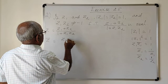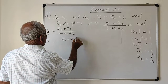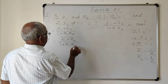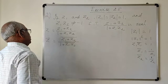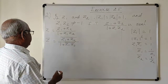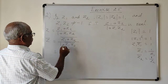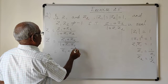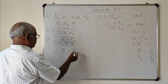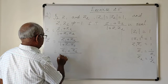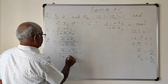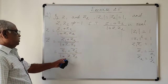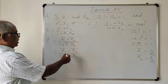We consider Z bar, which is the conjugate of Z1 plus Z2 divided by 1 plus Z1 into Z2. Taking conjugate of both numerator and denominator, we split the conjugate: Z1 bar plus Z2 bar, because the conjugate of a sum is the sum of conjugates. Similarly, the denominator becomes 1 plus Z1 bar into Z2 bar, since the conjugate of a product equals the product of conjugates.